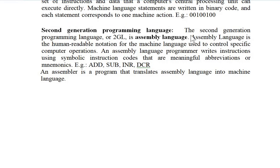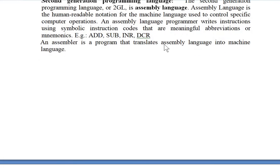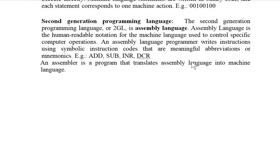Second generation language is also called assembly language. Assembly language is better than machine language in that it can be understood by humans, though it is not very close to human language. It uses human-readable notation called mnemonics — for example, ADD, SUB, INC, DEC. An assembler is a program that translates assembly language into machine language.